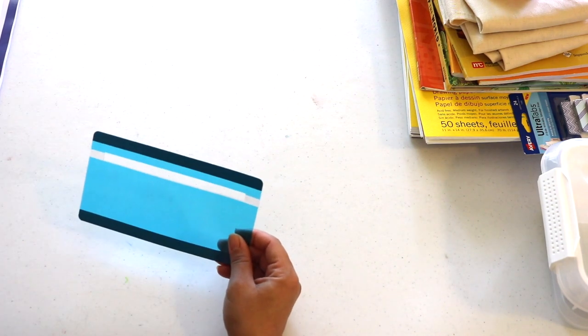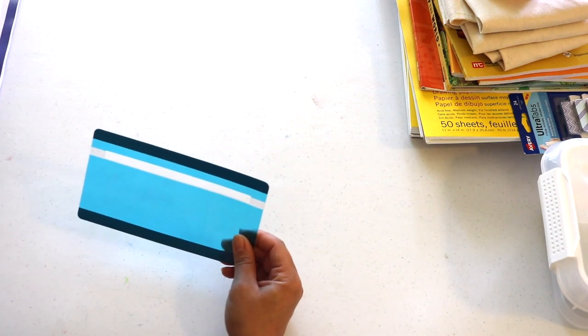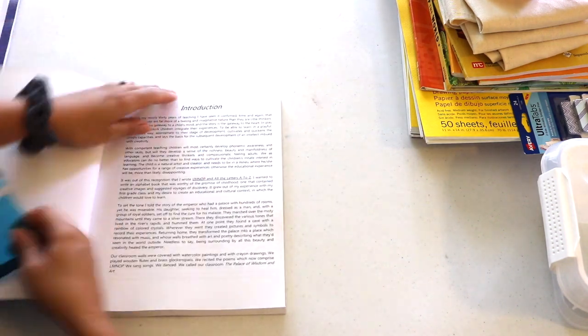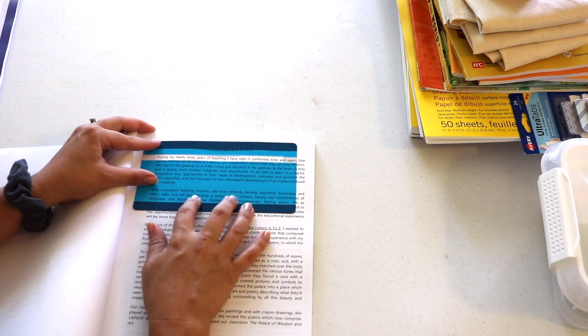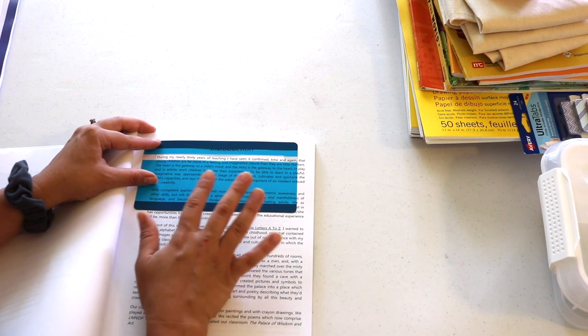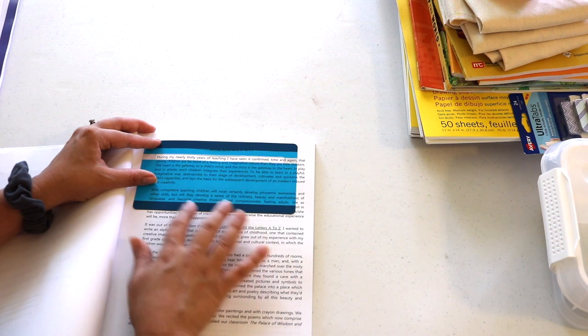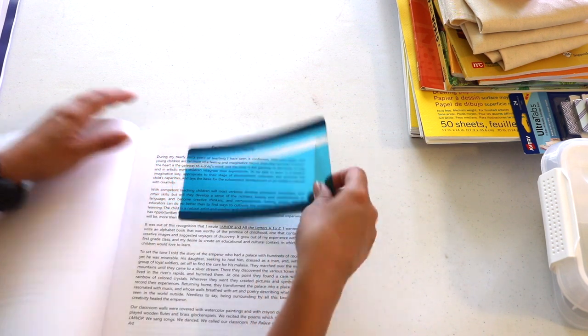Before I forget, I did buy two things off of Amazon recently. One is this cutout window tracker reading guide. When my Bella is reading her easy readers, she does seem to get overwhelmed with all the words and letters on the page, so I bought this as a guide for her. We've been using it and it has been helping.